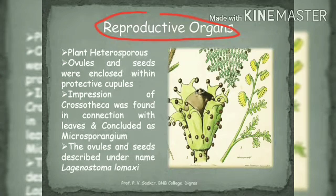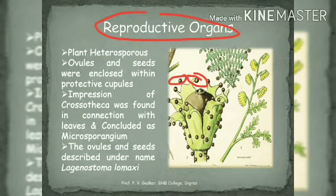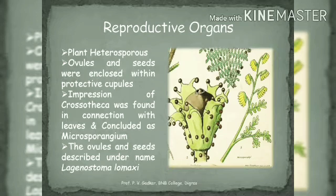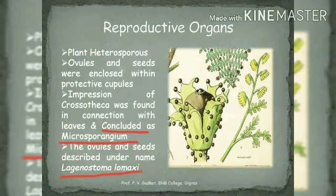The reproductive organs of the plant are heterosporous, and the ovules and seeds were enclosed within protective cupules. The impression of Crossotheca was found in connection with the leaves of Sphenopteris hoeninghausi and was thus concluded to be the microsporangium. The ovules and seeds were described because of the presence of capitate glands, and the seeds are described as Lagenostoma lomaxi.